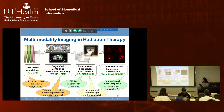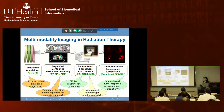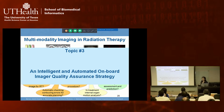The third project addresses automatic machine quality assurance. Once the treatment plan is sent to the treatment machine, we need to ensure the machine is accurate. Traditionally, QA of onboard imaging systems is performed manually on a daily, monthly, and yearly basis—requiring third-party QA tools, additional expense, human subjective errors, and hours of work. We propose an intelligent and automatic machine QA strategy.